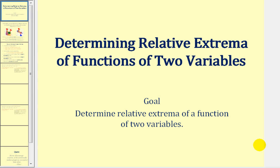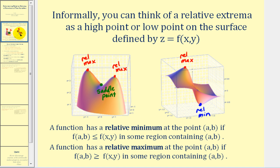Welcome to a video on determining the relative extrema of a function of two variables. Informally, you can think of relative extrema as high points or low points on the surface defined by z equals f of x, y.